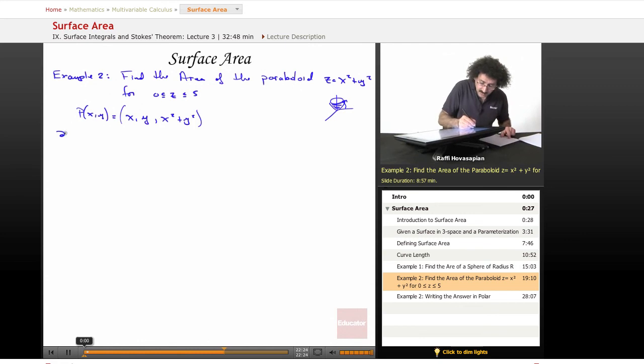So let's find dp dx. So this is going to be a vector. This is going to be one, zero, and two x. I'm just differentiating this. And let's go ahead and find dp dy. So dp dy, that's going to equal zero, one, and two y.